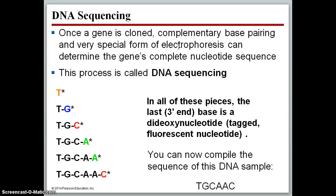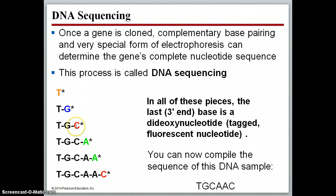Once the DNA has been amplified, sometimes sequencing will take place. Sequencing follows PCR closely but uses very special tagged fluorescent nucleotides. When a tagged fluorescent nucleotide is added, the DNA polymerase can't add any more nucleotides. So for example, with the sequence TGCAAC, as soon as DNA polymerase gets to a fluorescent nucleotide it'll stop. These fragments of different lengths go through a machine similar to gel electrophoresis that separates them by length and detects those fluorescent nucleotides to read the sequence.